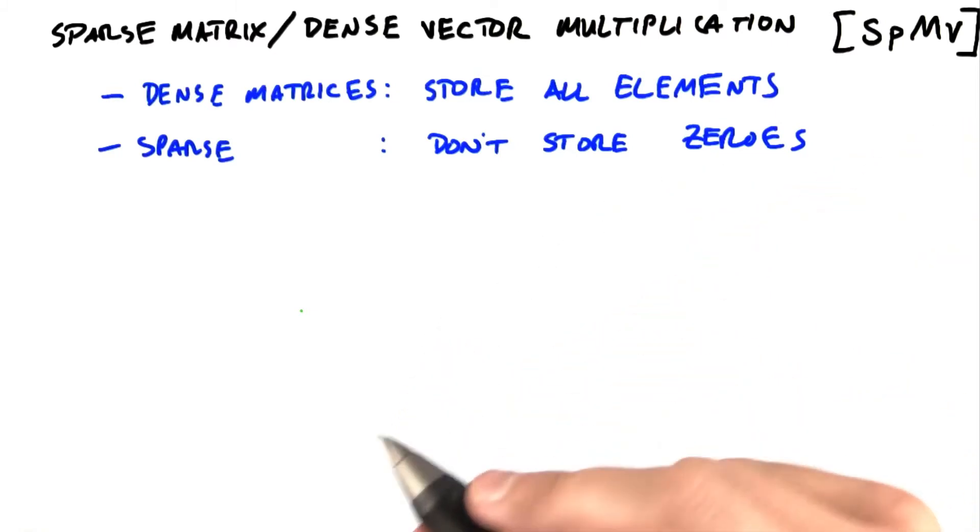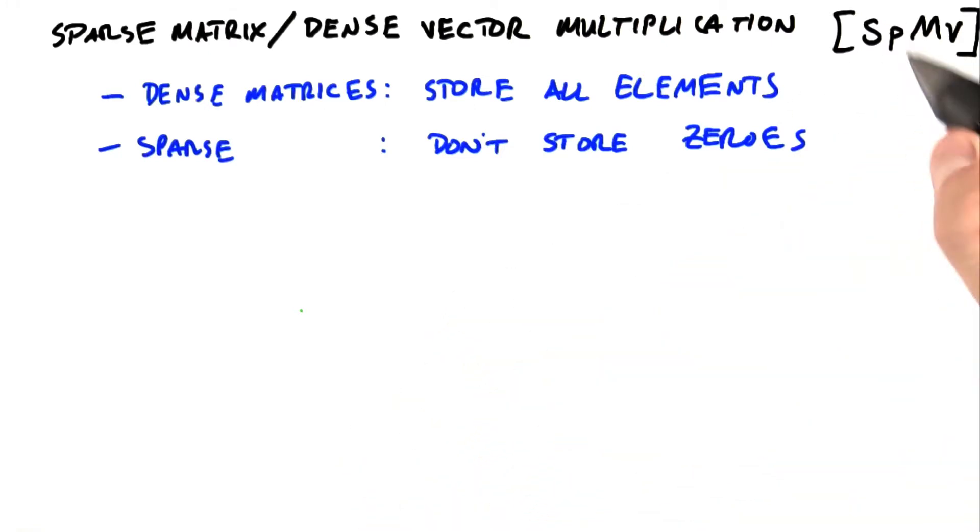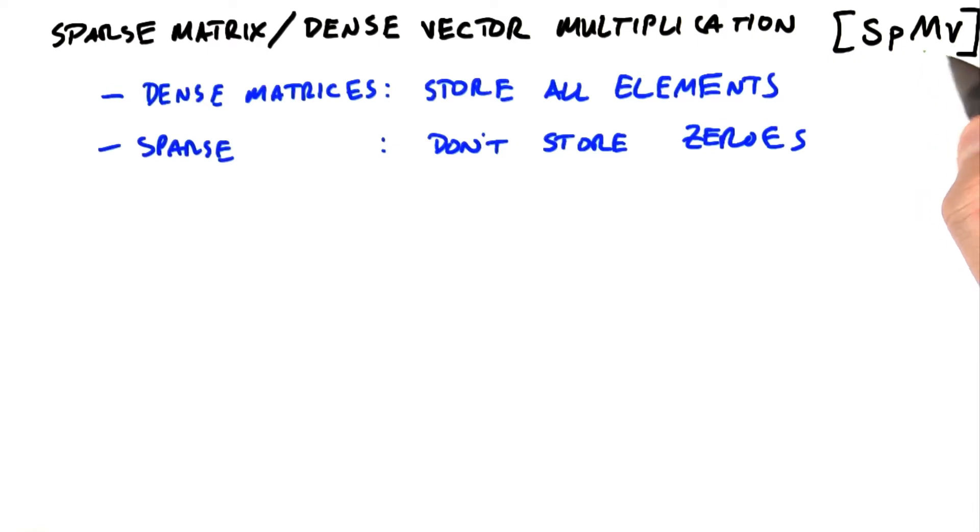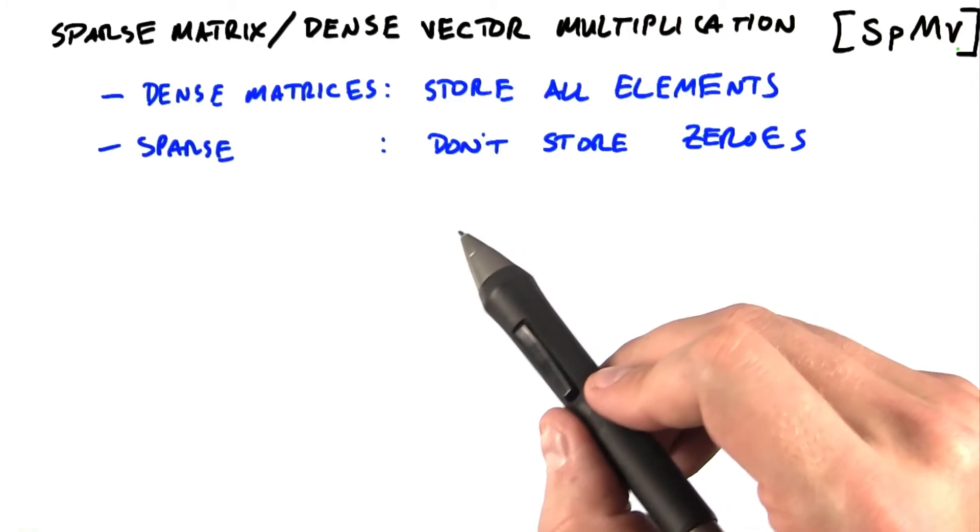So let's consider the problem of sparse matrix dense vector multiplication, which we abbreviate SPMV, sparse matrix vector. Many interesting matrices have lots of zeros, so we call those matrices sparse.